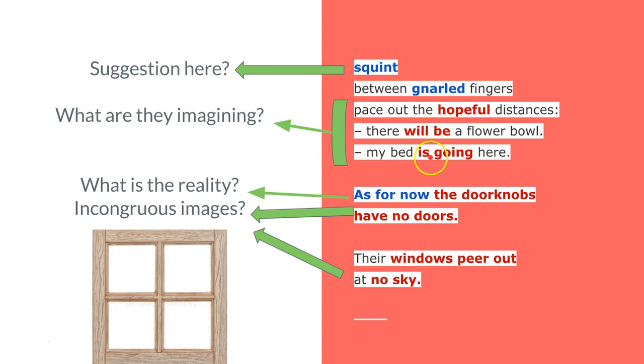What is the reality? Well, 'as for now'—'will be,' 'is going to be' is future; 'now' is the present. 'As for now the doorknobs have no doors and their windows peer out at no sky.' Now the comment here is these are incongruous images, because usually we'd say the doors have no doorknobs, there's no windows to look out. But there are windows but no sky beyond the windows, there are doorknobs but they have no doors. Maybe this is highlighting the absurdity of the situation—these promises have been given, these people are waiting, but there's nothing there in reality for them yet.